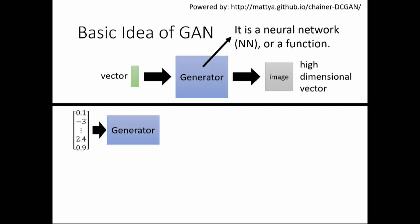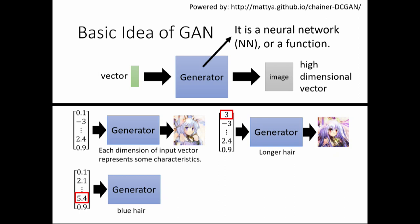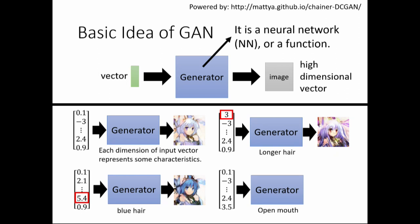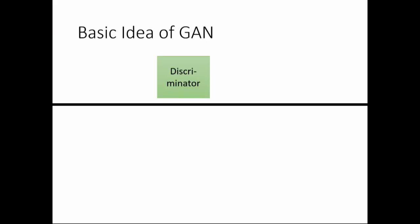Here is a concrete example. If your generator has learned from many images, given a random vector it will output an anime face. This is a real example generated by code found on GitHub. Each dimension of the input vector corresponds to some characteristic of the output image. If you modify the first dimension, probably the hair length will change. If you increase it, the character will have long hair. You can change another dimension to give the character blue hair, or change the last dimension and the character will start to smile.